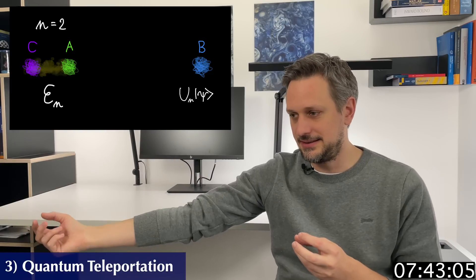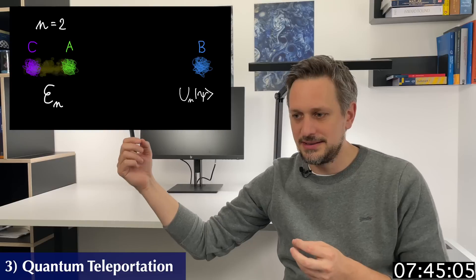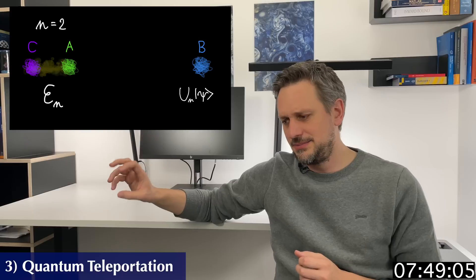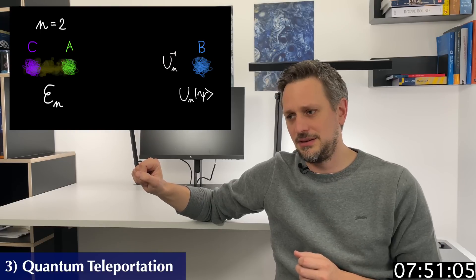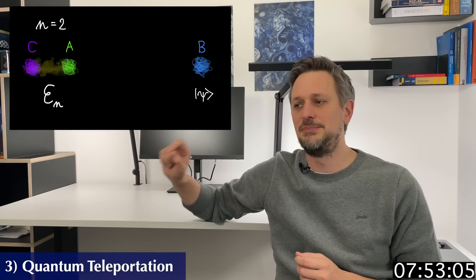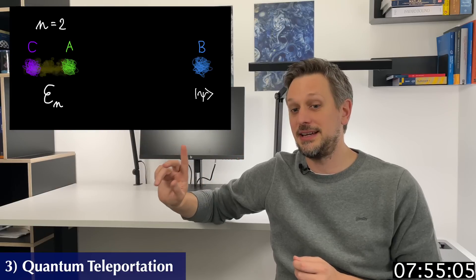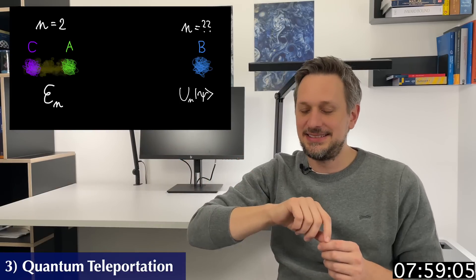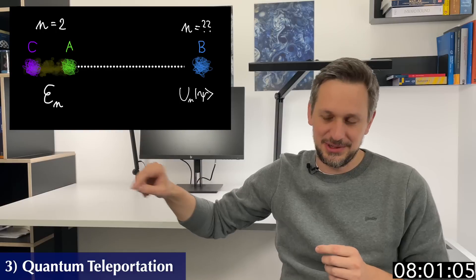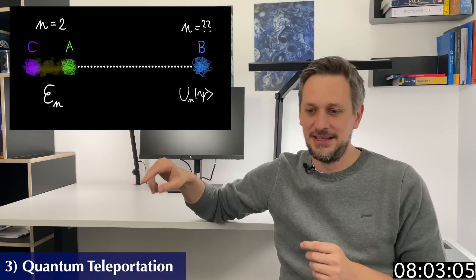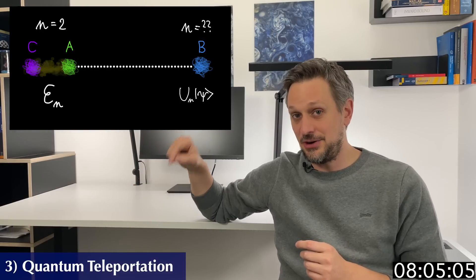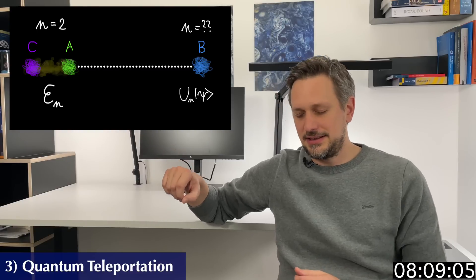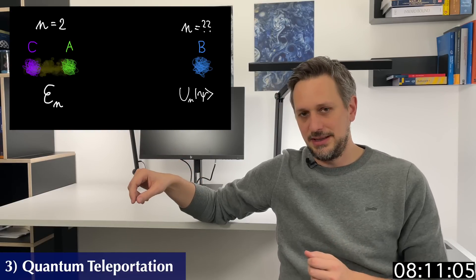And this modification is in principle very easy to fix, but you have to know exactly which kind of modification this is. So you need a classical line of communication from sender to receiver to tell them the outcome of the measurement at the sender. And this is again the catch that prevents superluminal communication.